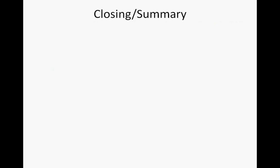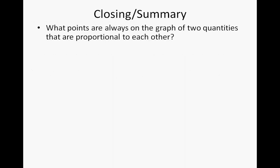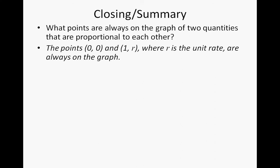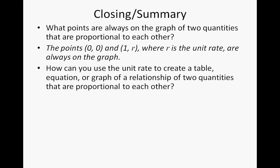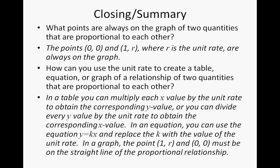For our summary: what points are always on the graph of two proportional quantities? You should have two points — the origin 0 comma 0, and the unit rate point 1 comma r — both are always on a graph of a proportional relationship. To use the unit rate to create a table, equation, or graph: multiply the x value by the constant to get the y value, or divide the y value by the unit rate to get the x value. On a graph, the points 0 comma 0 and 1 comma r always reveal the unit rate.